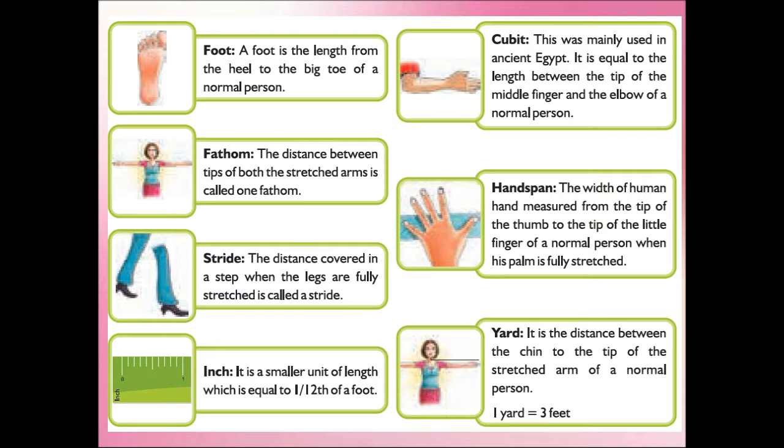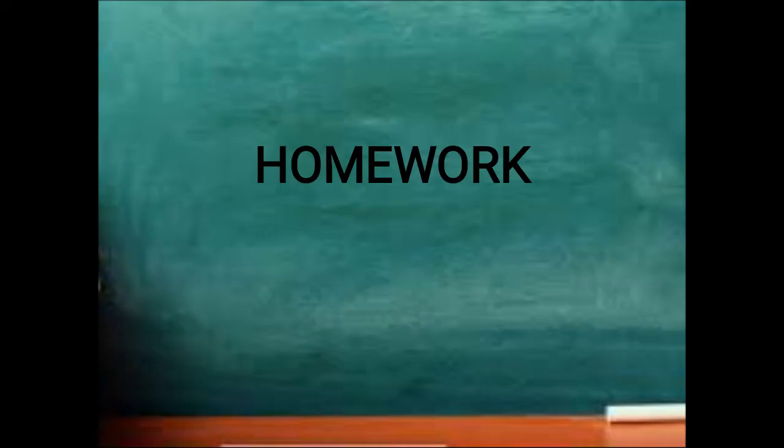We also saw some early types of measurements. So today is about this. Note on your homework, take your workbook page number nine. The eleventh question: what is the difference between periodic and vibratory motion? And the twelfth one: why did people need advancement in transportation during modern period? Do your work and upload it in Google Classroom app. So we can see the remaining topic in next session. Till then stay connected, stay safe. Bye.